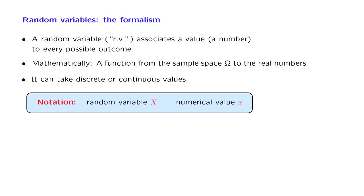Throughout, we want to keep noting this very important distinction. We make a distinction between random variables, which are abstract objects — functions on the sample space — and they are denoted by uppercase letters. In contrast, we will use lowercase letters to indicate numerical values of the random variables, so little x is always a real number, as opposed to the random variable capital X, which is a function.